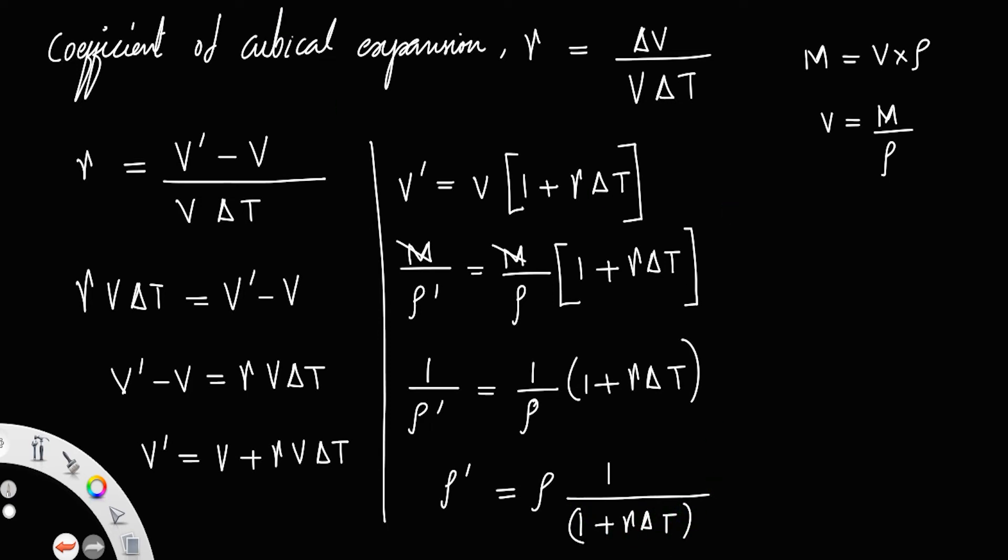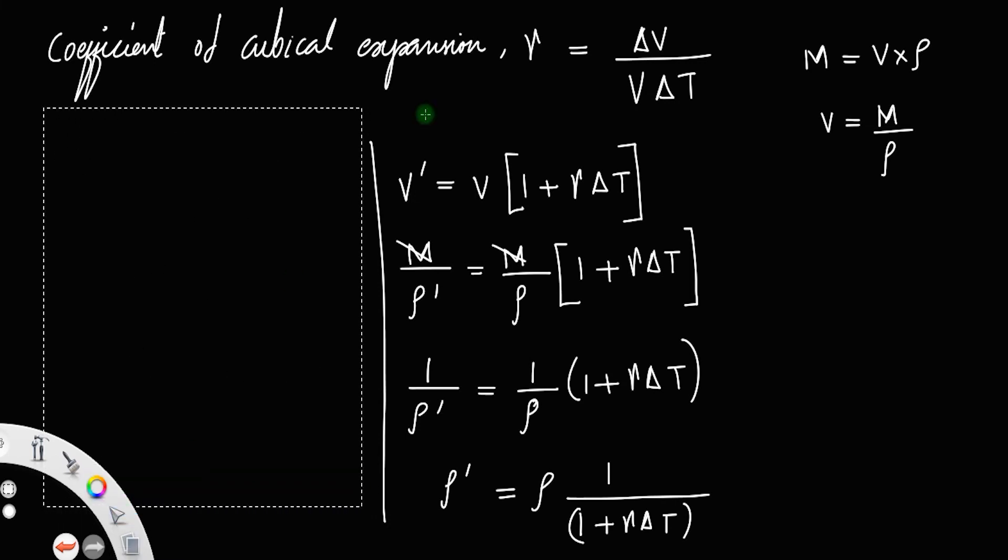And this can be simplified as rho dash is equal to rho into, you can take this again to the numerator, but you have to put a negative 1 as the power.